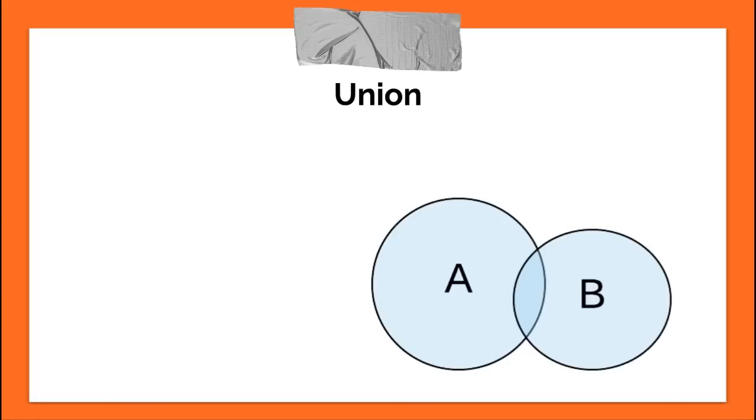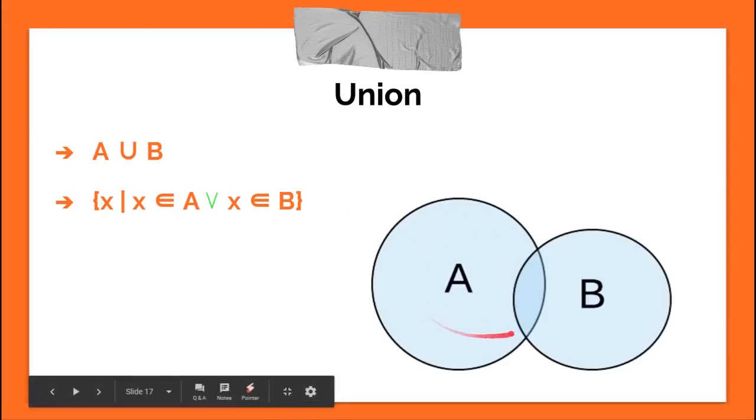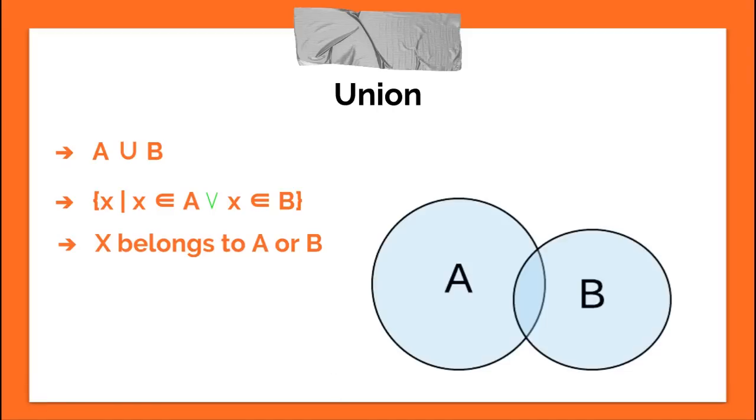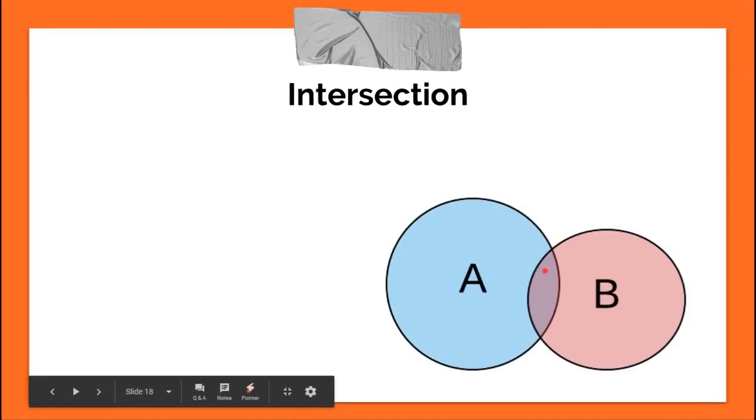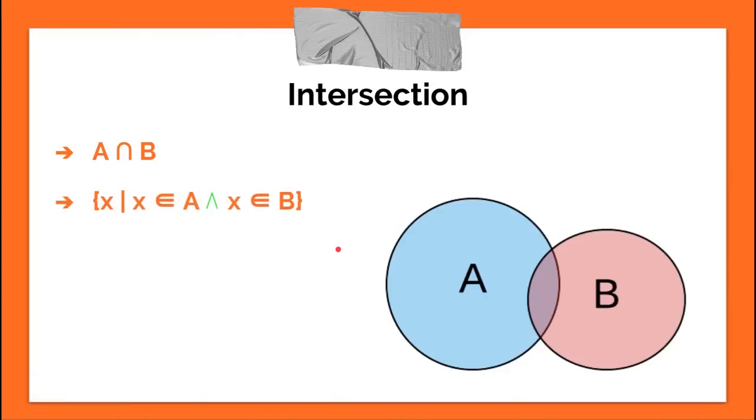Union. Look at that diagram with A and B. A union B. X such that X is an element of A, or X is an element of B. If you look in the diagram, everything in A and everything in B is going to be included in A union B. X belongs to A, or it could belong to B. Either one. Intersection. Intersection is going to be this area. I tried to make it kind of purple, combining the blue and the pink. X such that X is an element of A, and X is an element of B.